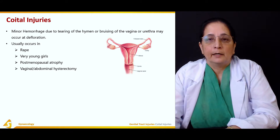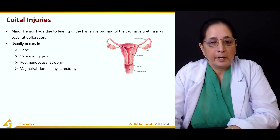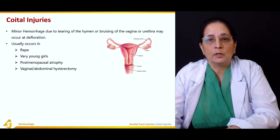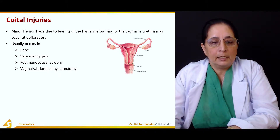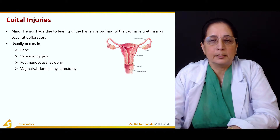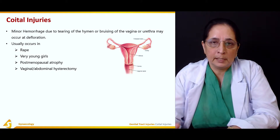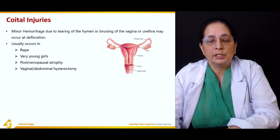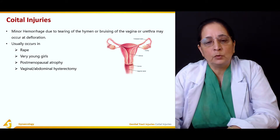These injuries usually occur in rape victims, in very young girls, in postmenopausal atrophy, and following vaginal or abdominal hysterectomy. All these are the common conditions that lead to coital injuries.